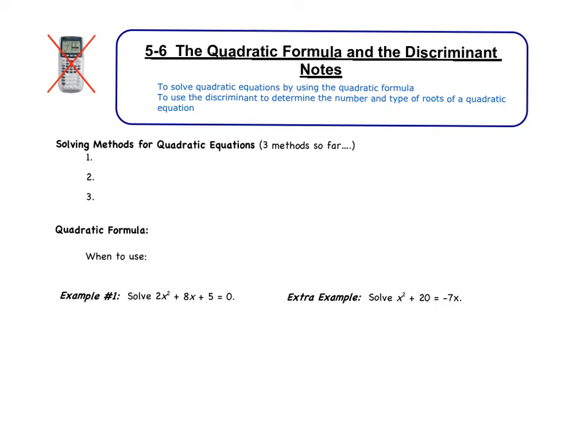Welcome to the last video of Chapter 5, which is Section 6, the Quadratic Formula and the Discriminant. This should be a review. The quadratic formula is used to solve quadratic equations. We've learned three methods so far. The first one was factoring. We also looked at the square root method. And lastly, we talked about completing the square.